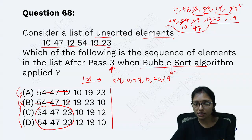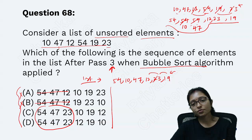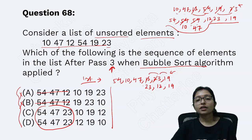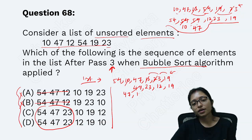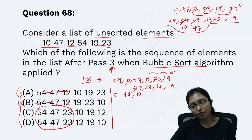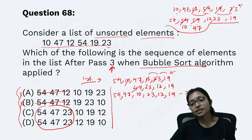Now running the second pass: no change at the start. Then 23 and 12: swap. 19 stays. Then 47 and 23: no swap, 47 is already larger. Then 47 and 10: swap — 47 moves forward, 10 goes back. No further swapping. After the second pass: 54, 47, 10, 23, 12, 19.